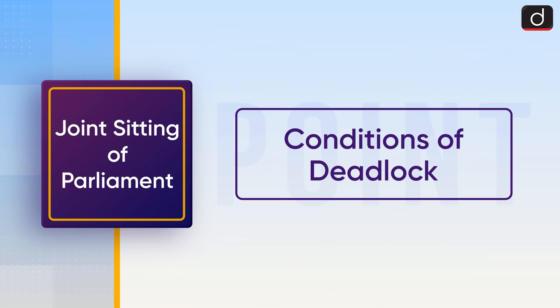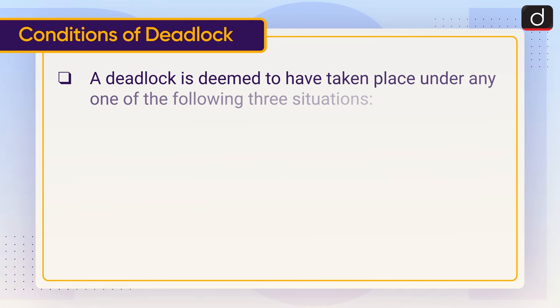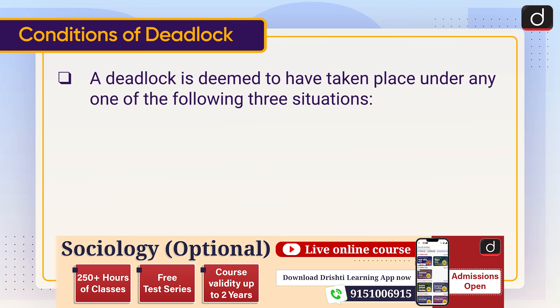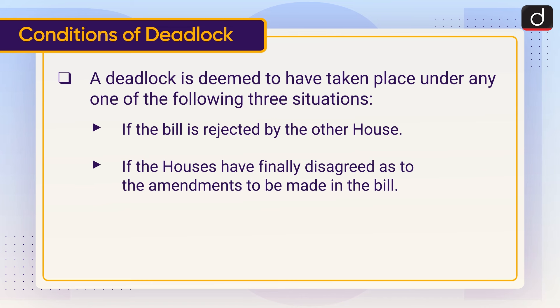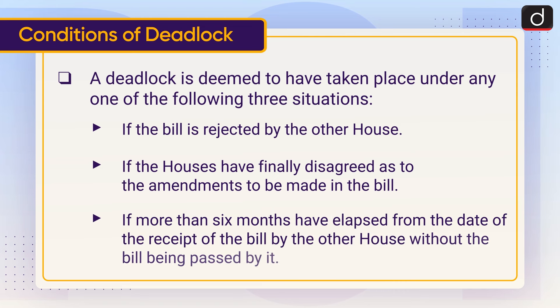Moving on to the conditions of deadlock. A deadlock is deemed to have taken place under any one of the following three situations: if the bill is rejected by the other house; if the houses have finally disagreed as to the amendments to be made in the bill; or if more than six months have elapsed from the date of the receipt of the bill by the other house without the bill being passed by it.